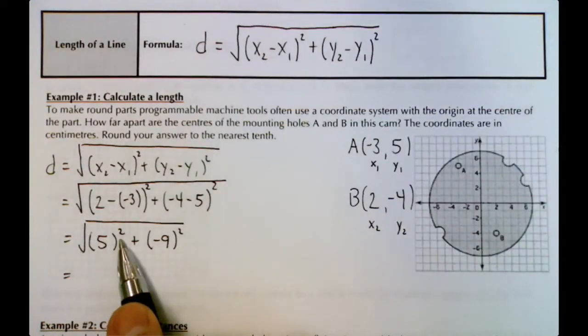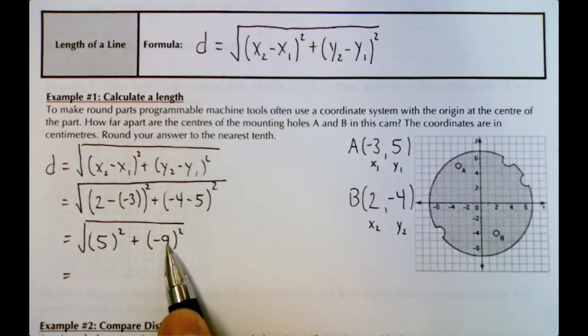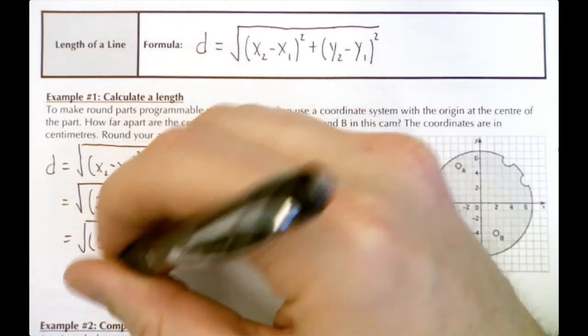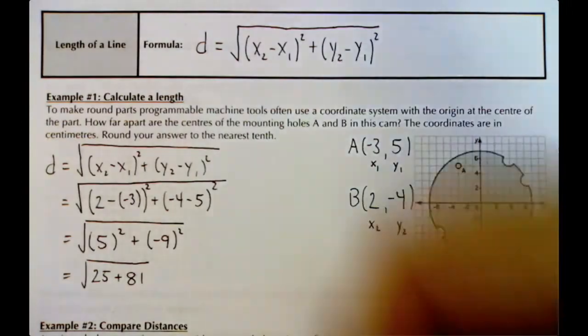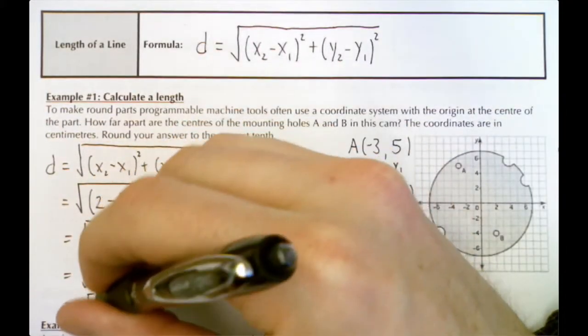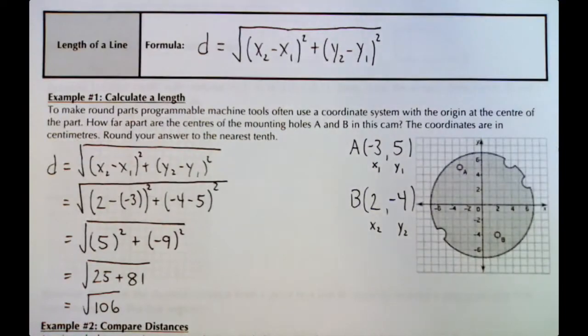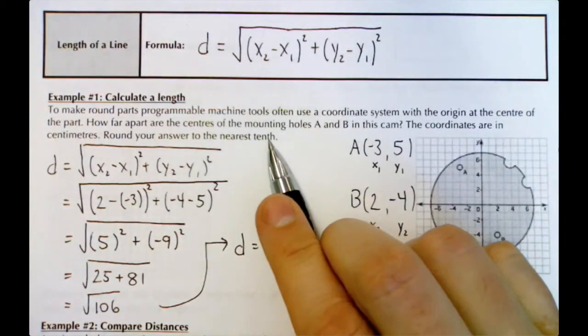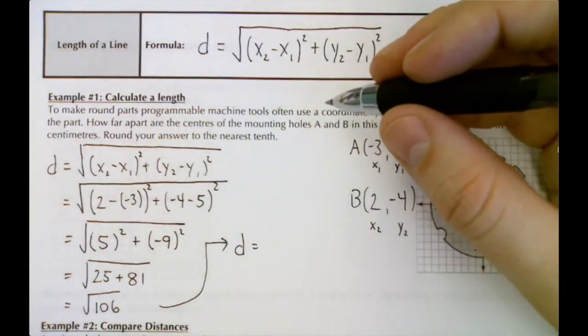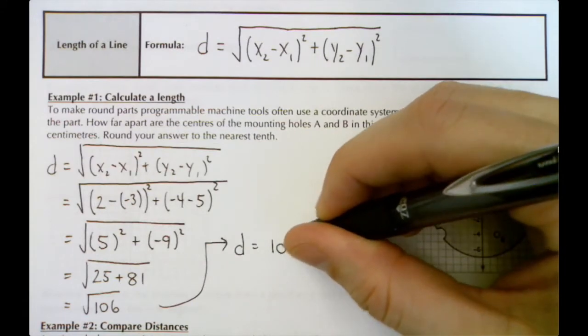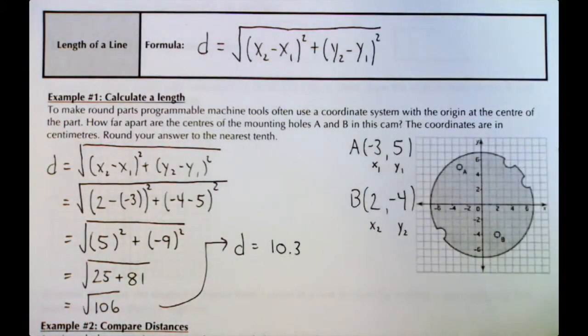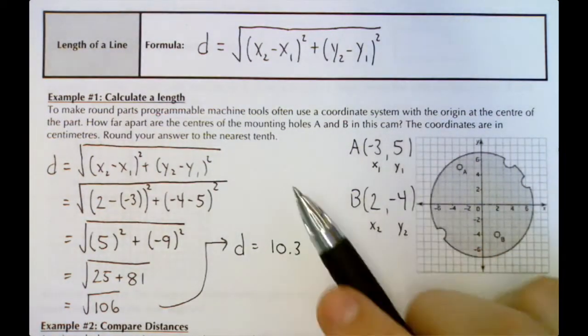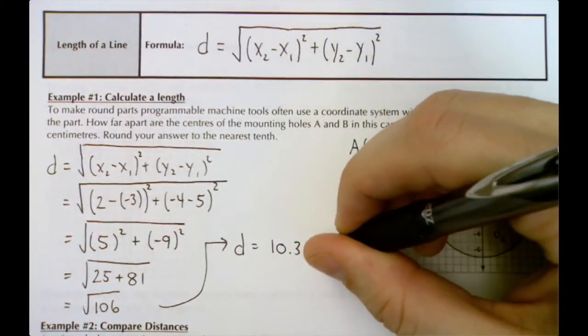5² is 25, (-9)² is 81, so we have √(25 + 81). 25 and 81 is 106, so we have √106, and that gives us a distance to the nearest tenth of 10.3 centimeters. That's our final answer.